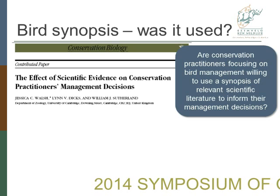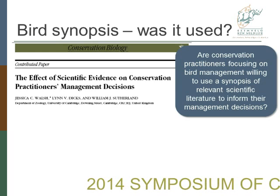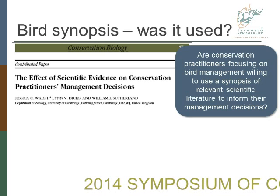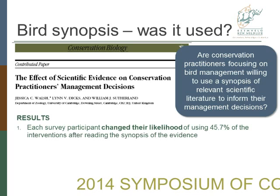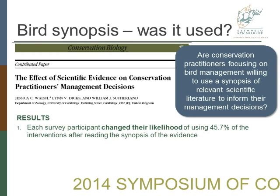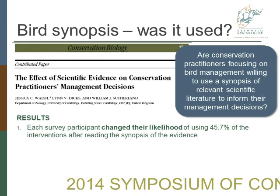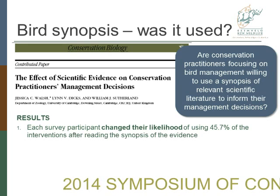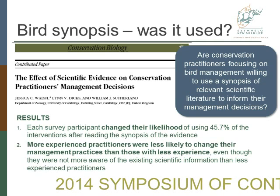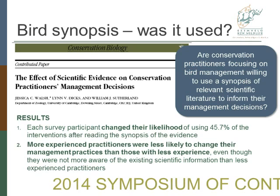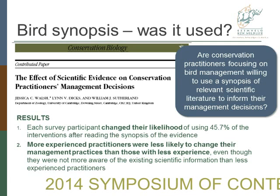Jess was involved in looking to see whether this bird synopsis has actually been helpful, essentially asking the question: are conservation practitioners focusing on bird management willing to use a synopsis of the relevant scientific literature to inform their management decisions? The key results were that each survey participant actually changed their likelihood of using almost half of the interventions after reading the synopsis. So it seems people thought this would be useful. What was also interesting was that more experienced practitioners were less likely to change their management practices than those with less experience — which is very interesting and perhaps not very positive — even though they were not more aware of the existing scientific information. The third key finding was that improved accessibility to scientific information would benefit conservation management outcomes.